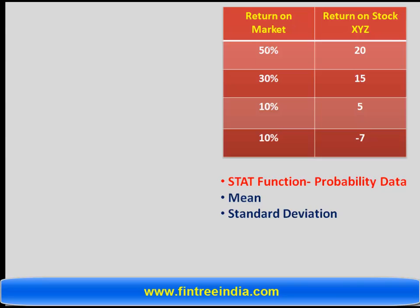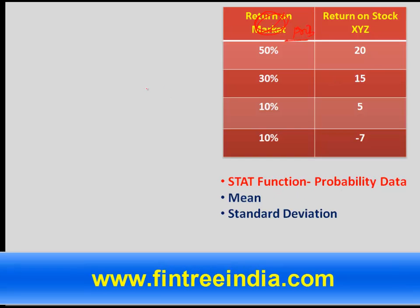so now let us go further now what we have here is the probability data we have probability 50 30 10 and 10 and return on stock 20 15 5 and minus 7 and we have been asked to calculate the mean which would of course be the probability weighted average and the standard deviation of this data set